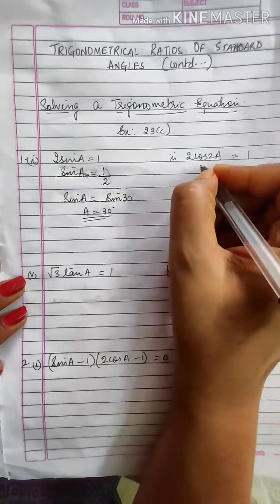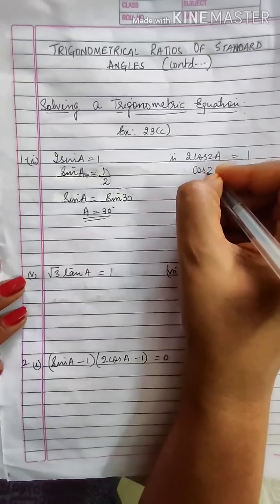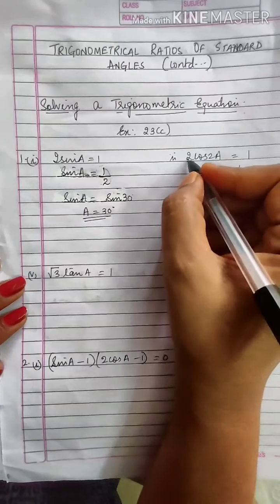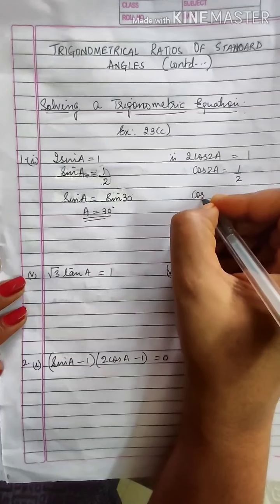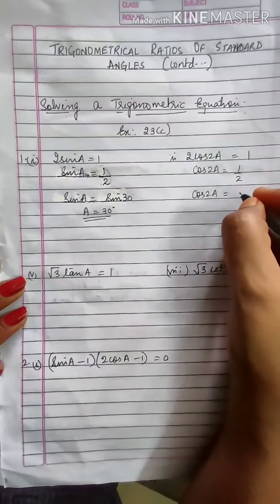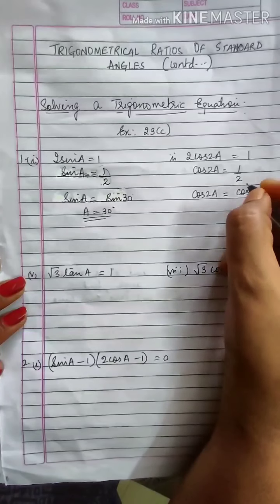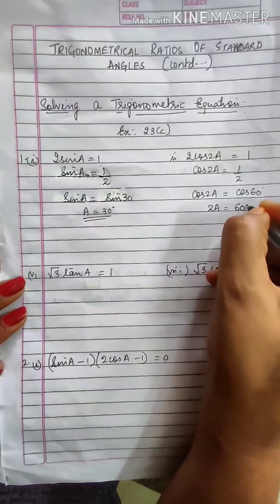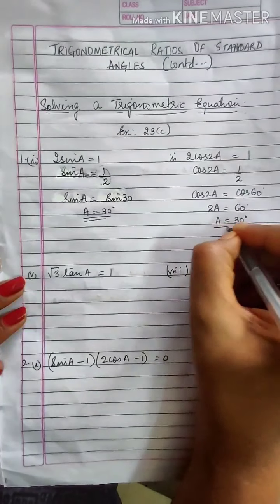Moving on to the next one: 2 cos 2A is equal to 1. Here cos 2A is equal to 1 by 2 — you are transposing 2 to the right hand side. Now you know the value of cos for which it is half; it is cos 60, because cos 60 is half. So 2A is equal to 60 and A will be equal to 30 degrees.